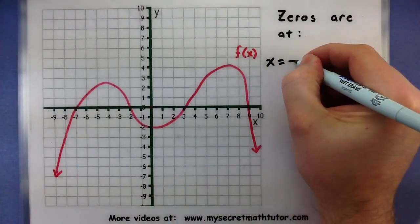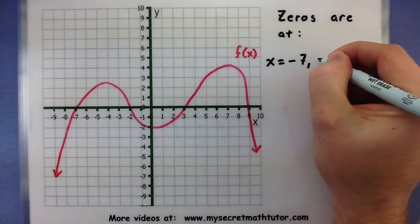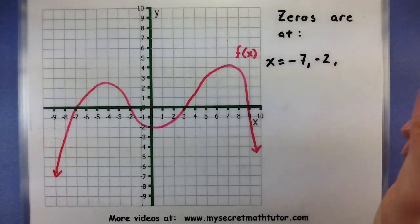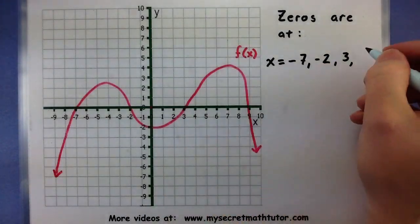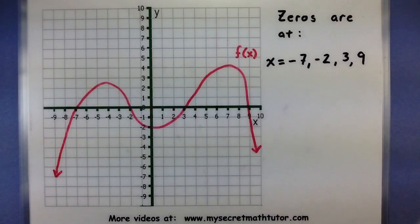So when x equals negative 7, again when it equals negative 2, at 3, and 9. So this one has one, two, three, four zeros, and it's really easy to spot them from the graph.